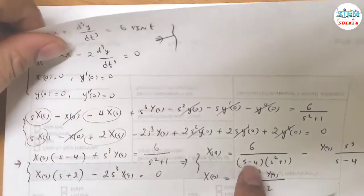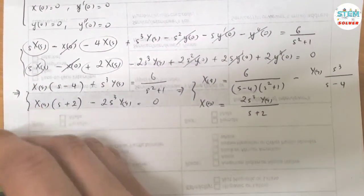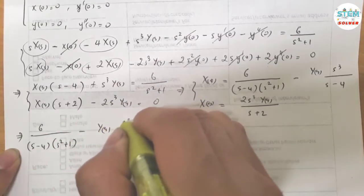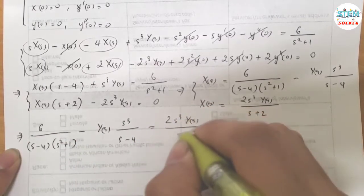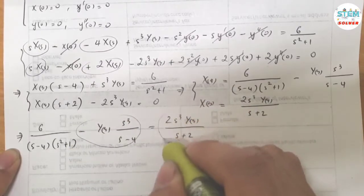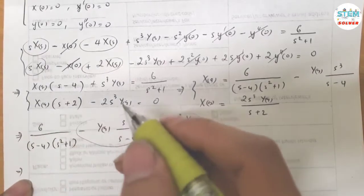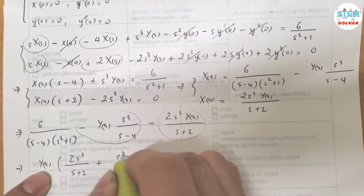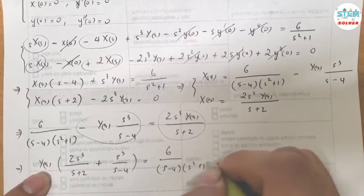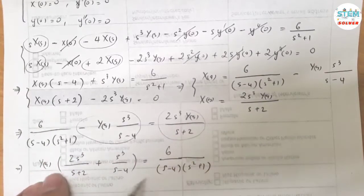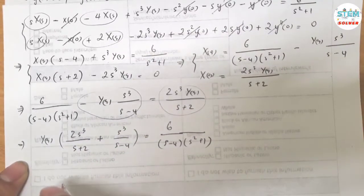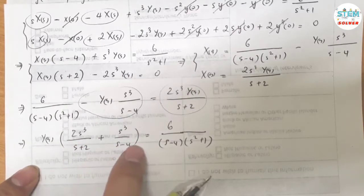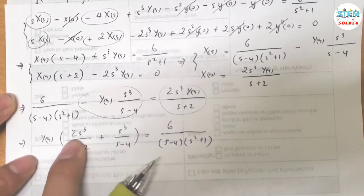Since X(S) equals both of those expressions, set them equal to each other and solve for Y(S). Capital Y(S) appears on both sides, so move the Y(S) terms to one side and factor. Then multiply everything in parentheses by (S minus 4) over itself to combine the terms.